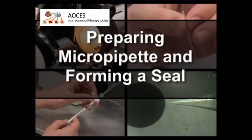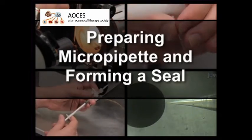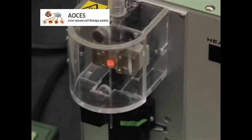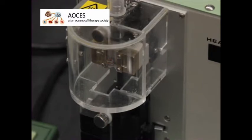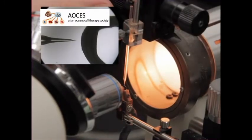Now that we have reviewed the principles, let's go over the steps required to perform a patch clamp recording. Start by pulling a borosilicate glass tube into micropipets using a pipet puller. Next, fire polish the tip to obtain the appropriate diameter and resistance.